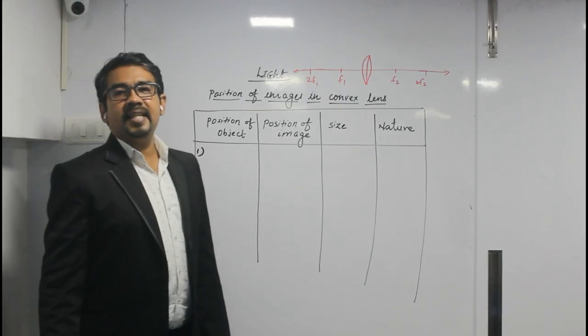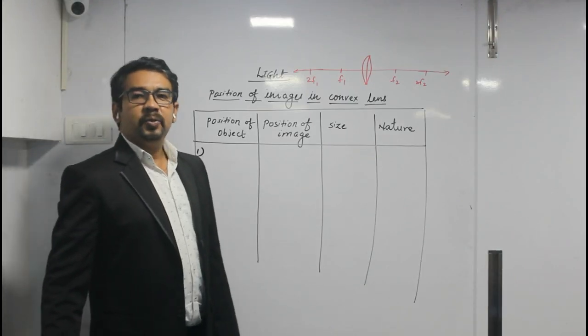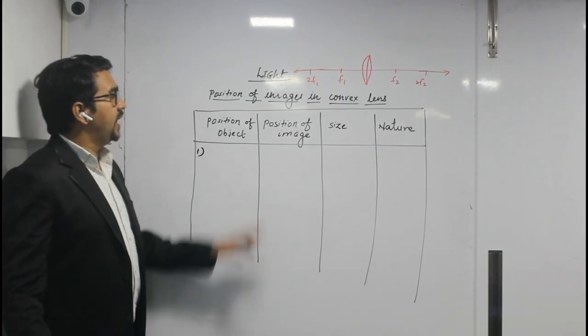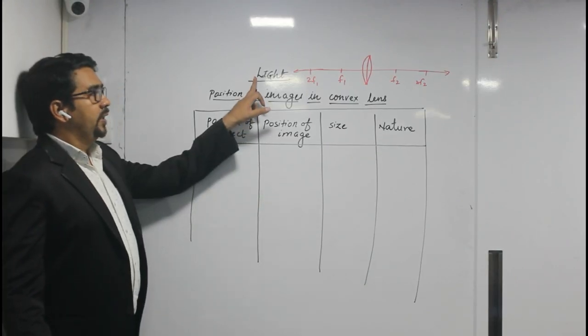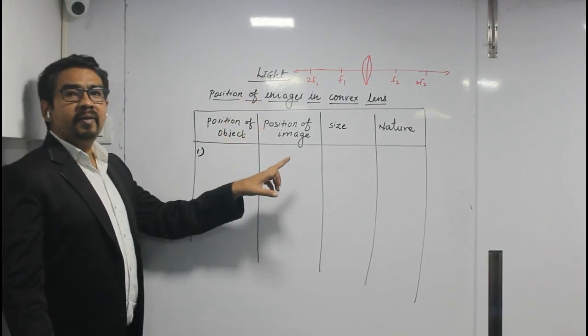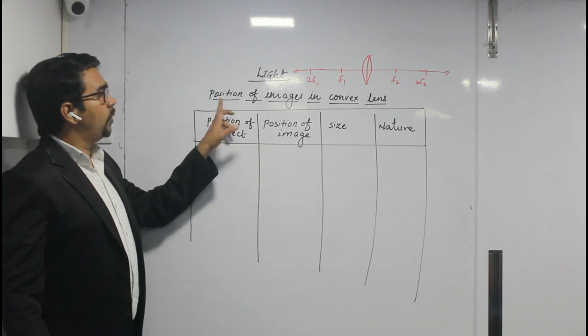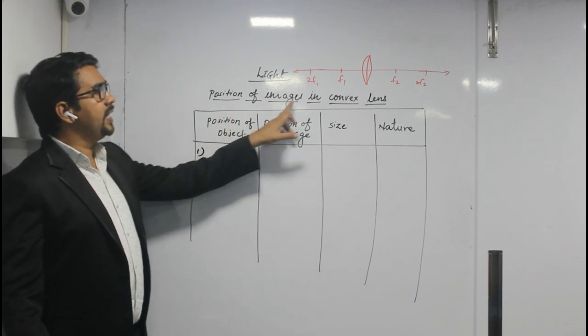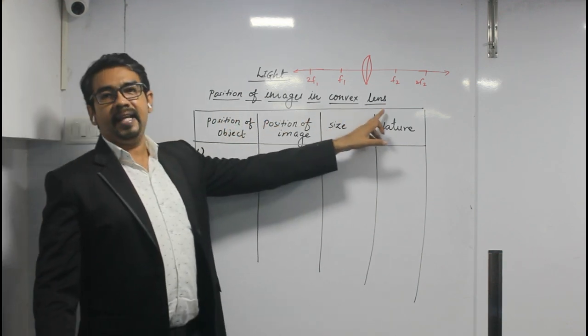Good evening everyone, this is Jay sir. Today's topic is the Position of Images in Convex Lens.